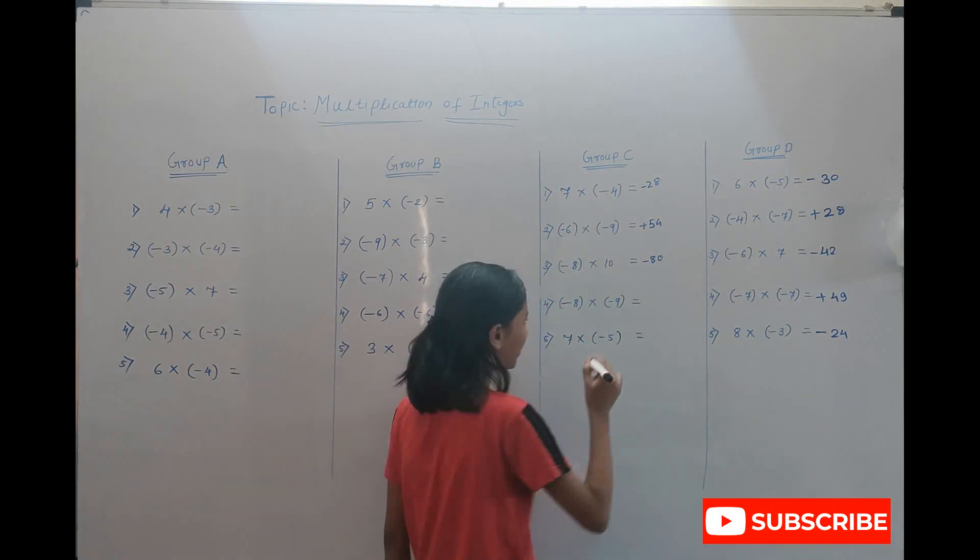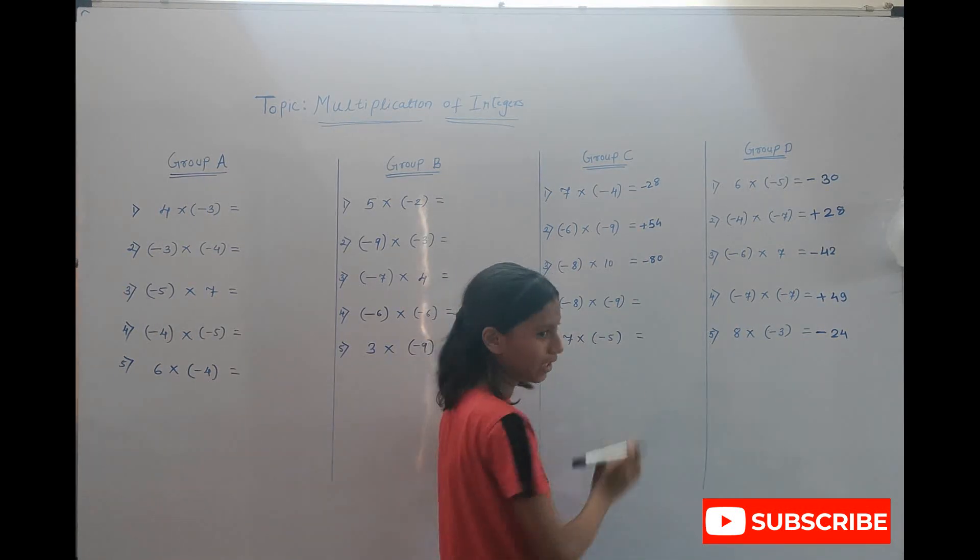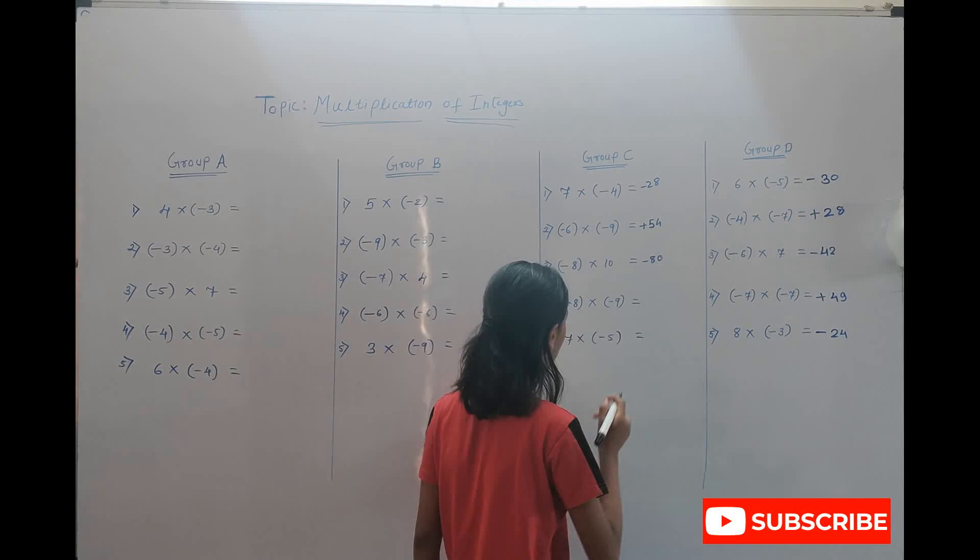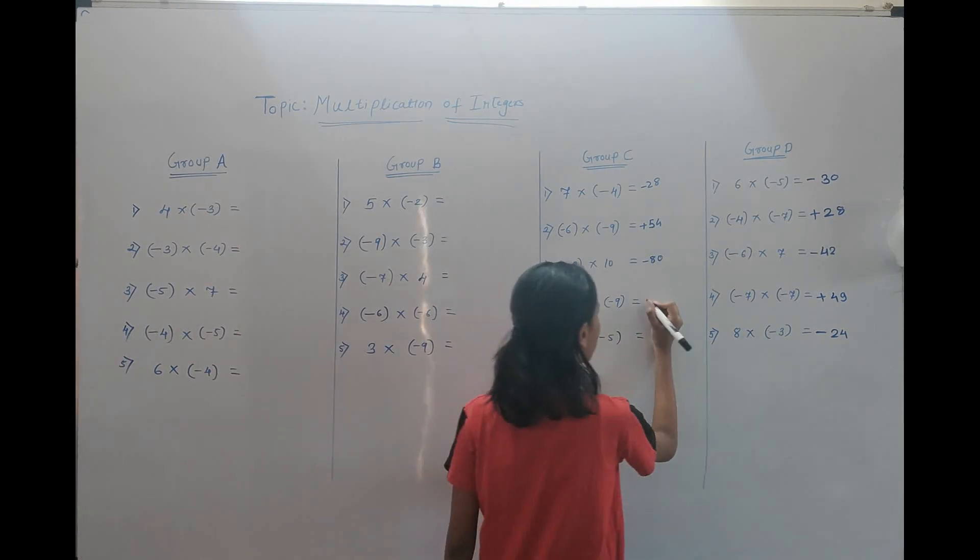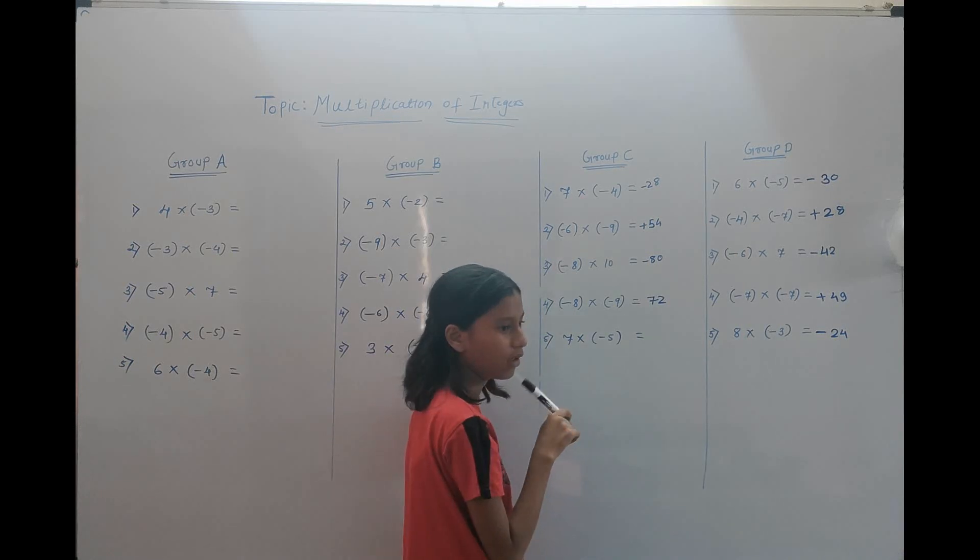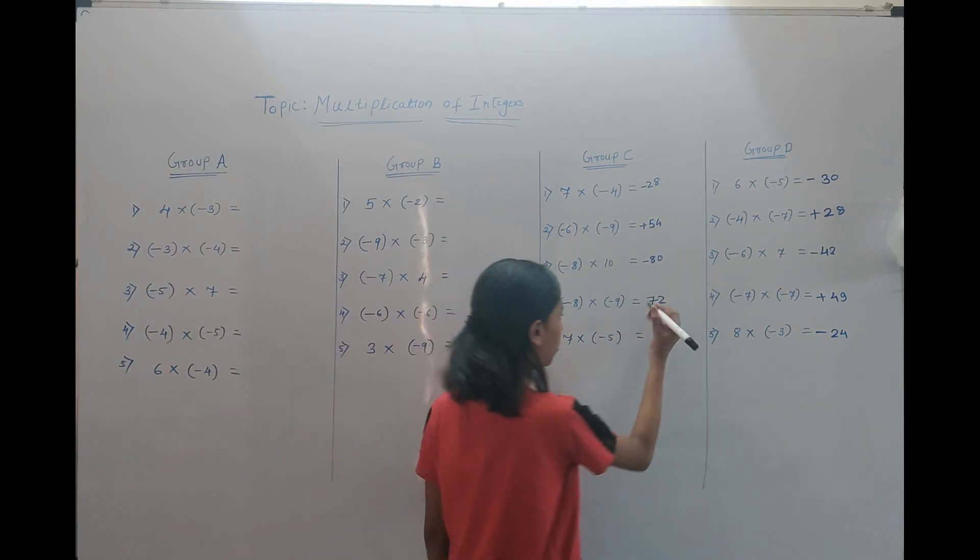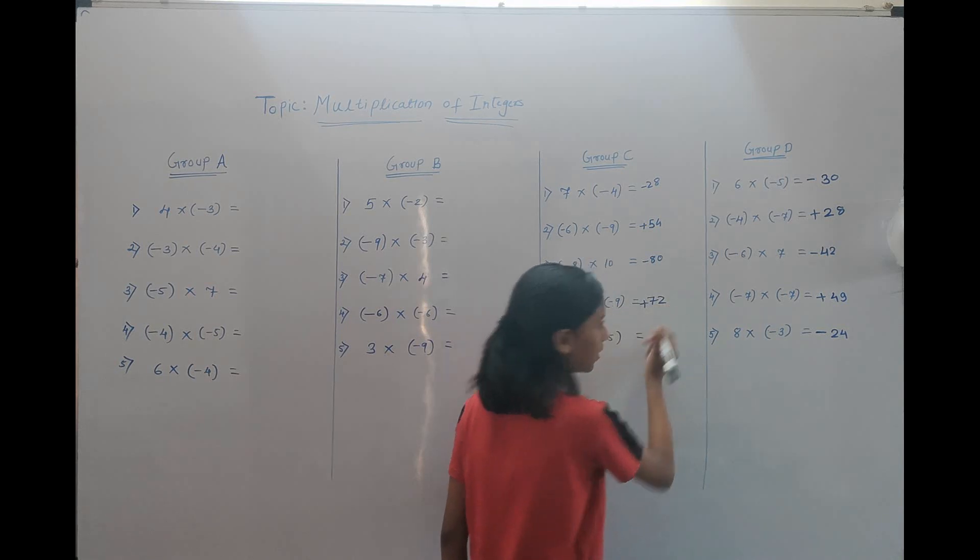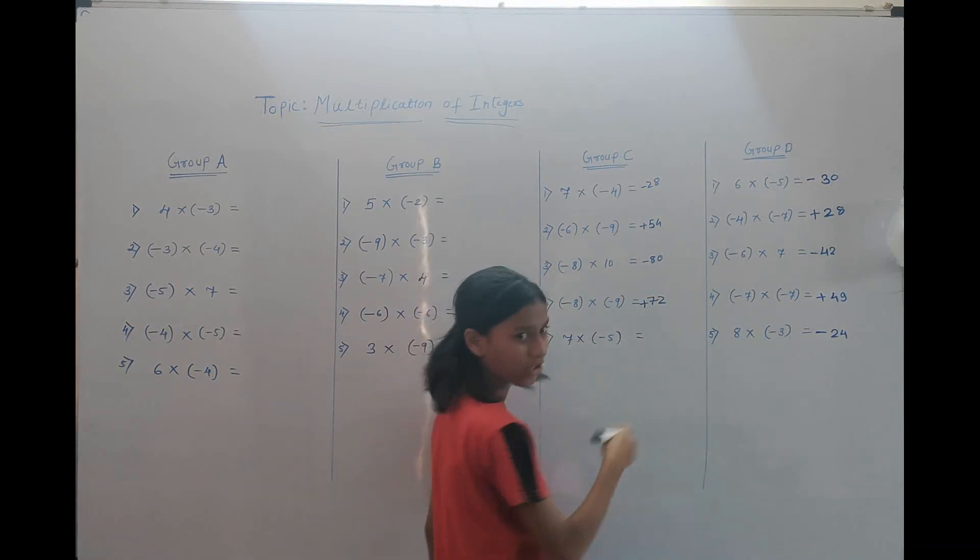Eight, nine. Eight multiplied by nine. The answer is seventy-two. Both signs are the same, so we have to give a positive sign.